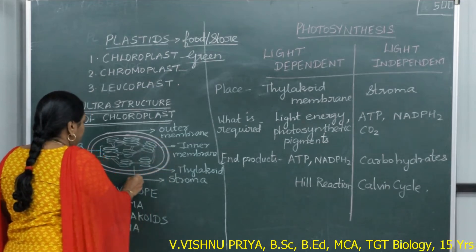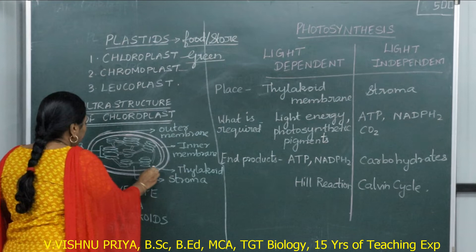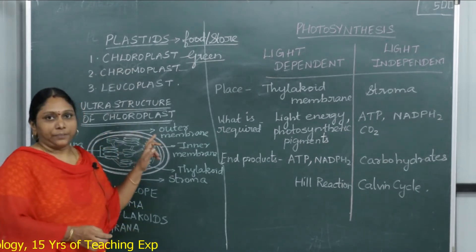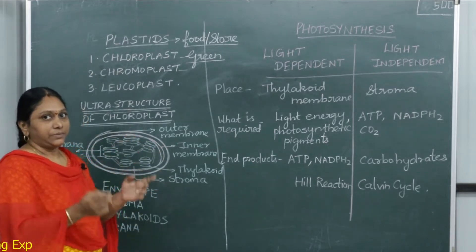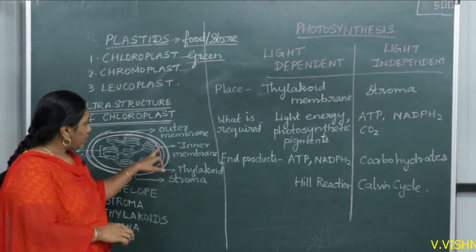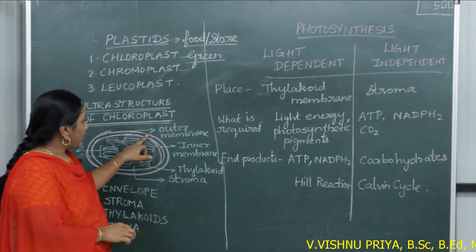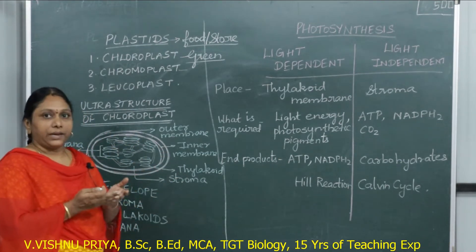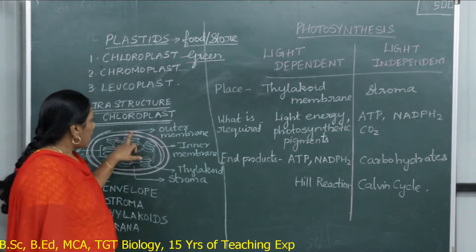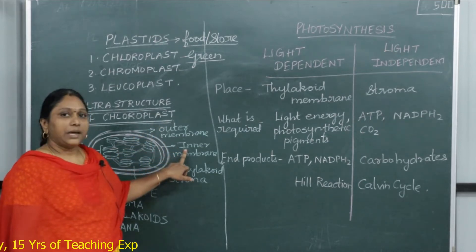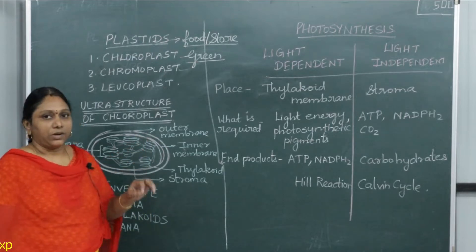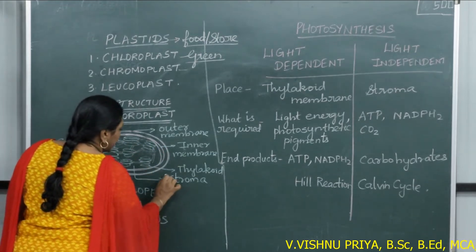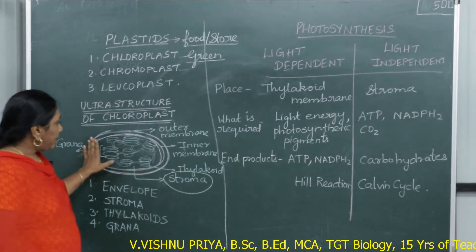The outer covering of the chloroplast is called the envelope. In the case of chloroplast, the outer covering has two membranes: the outer membrane and the inner membrane. The space between these two is called the inter-membrane space. Inside the inner membrane, the background fluid is called the matrix, and that matrix substance is called stroma — the complete background of the chloroplast is called stroma.